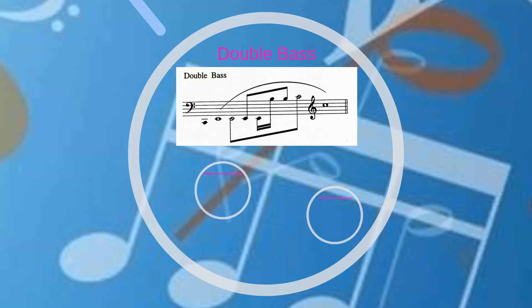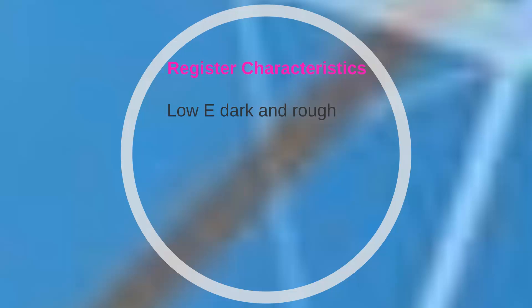Some basses have a fifth string tuned to double C, while others may have an extension on the E string to reach double C. Basses without the fifth string or extension must either tune the E string down to double C or move the part an octave higher. The double bass is the only transposing member of the bowed string family — it transposes an octave to avoid ledger lines. The individual tone colors of the four strings make the primary distinction in the sound of the bass. The low E string is dark and rough, while the middle two strings, A and D, are much more mellow.